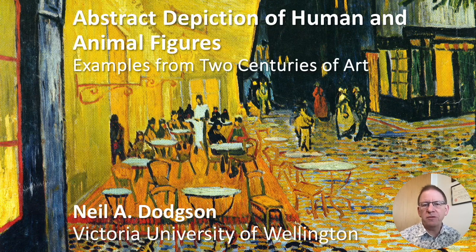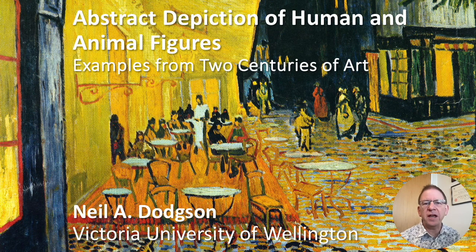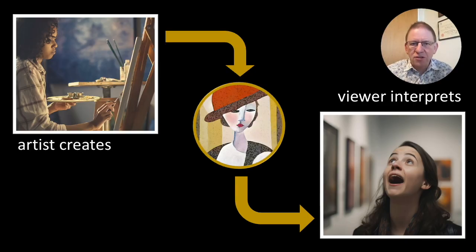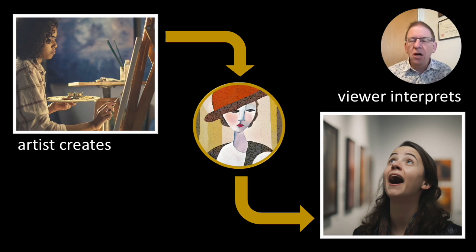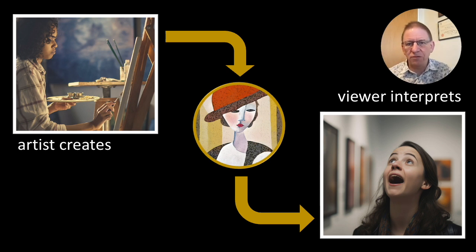An artist can illustrate a human figure using just a few strokes of the brush. How is it that the artist knows that you will interpret that human figure correctly? That's what we're going to investigate today. The human artist creates an impression of the human figure and the human viewer interprets it as a human figure. What's going on inside the artist's head and the viewer's head, and can we emulate what the artist is doing in a computer?